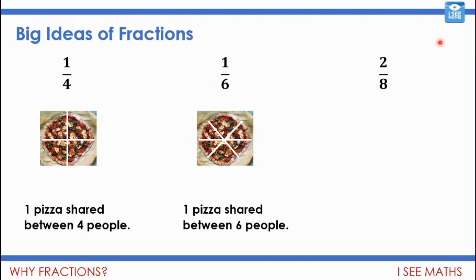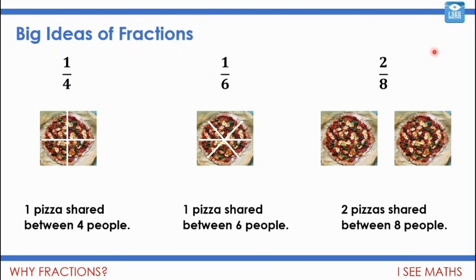Now, what about two eighths? If I was to say, well, two pizzas shared between eight people. I wonder what you'd do then. I wonder what you'd do. Now, my thought is it might be that you could do this. Take each pizza and split each pizza into quarters. And so now I've got eight pieces. So how much does each person get? They get a quarter.